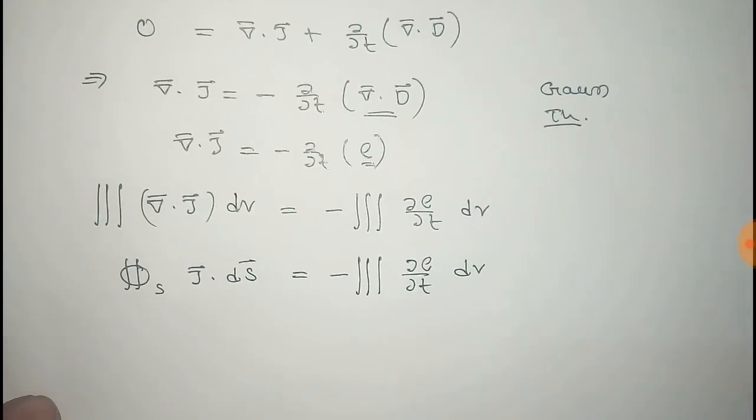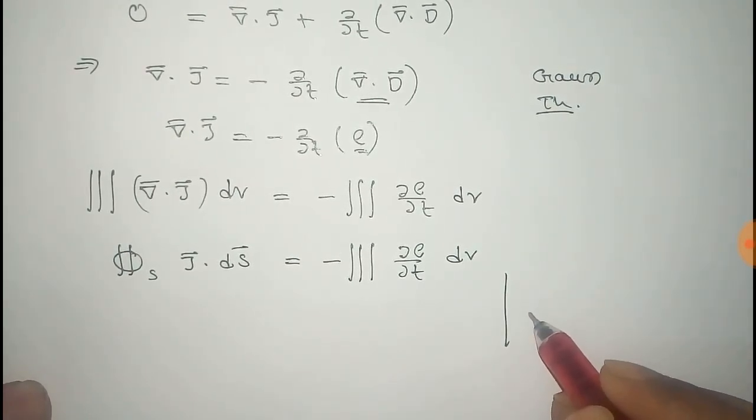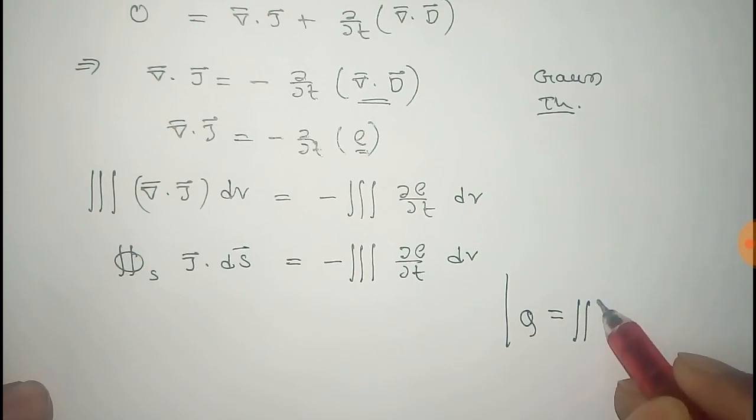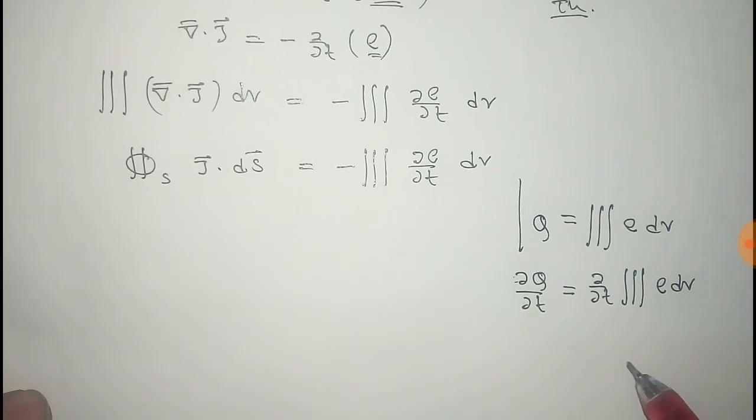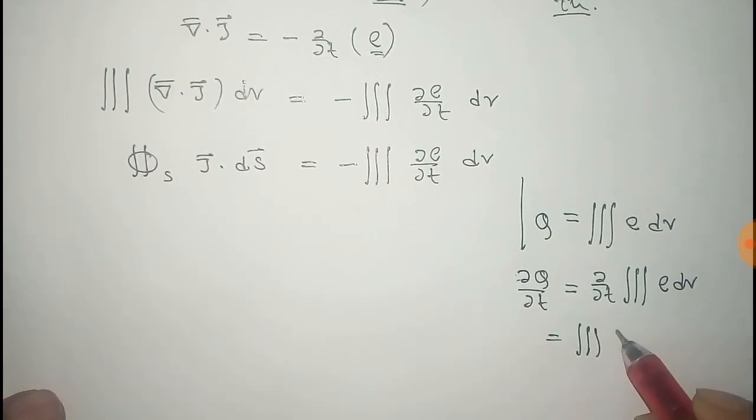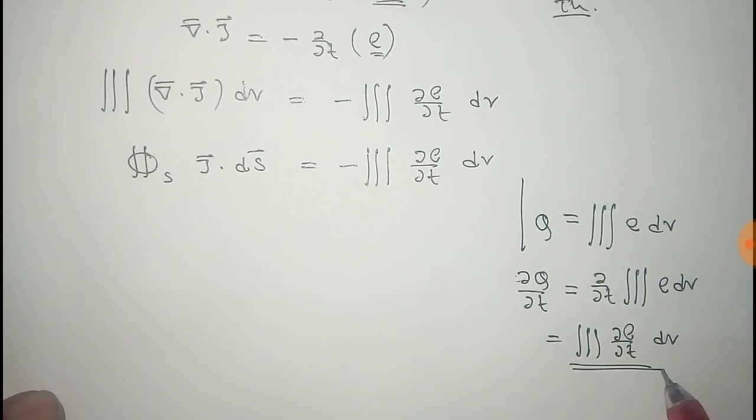We know that total charge Q equals volume integral rho into dV. And if you differentiate both sides with respect to time, del Q del T equals del del T of integral rho dV, that is equal to integral del rho del T into dV. Now, we can write this down.